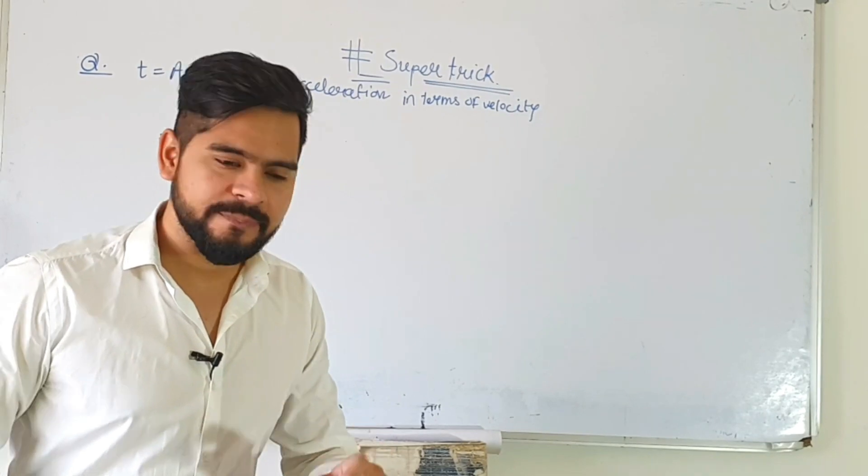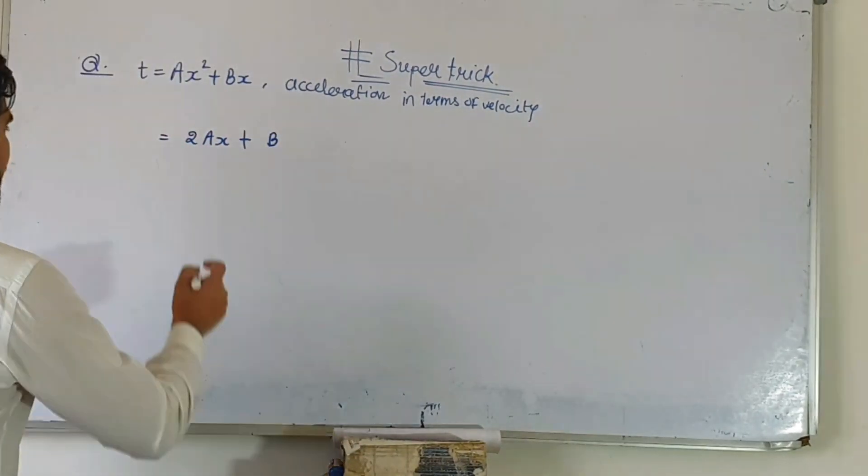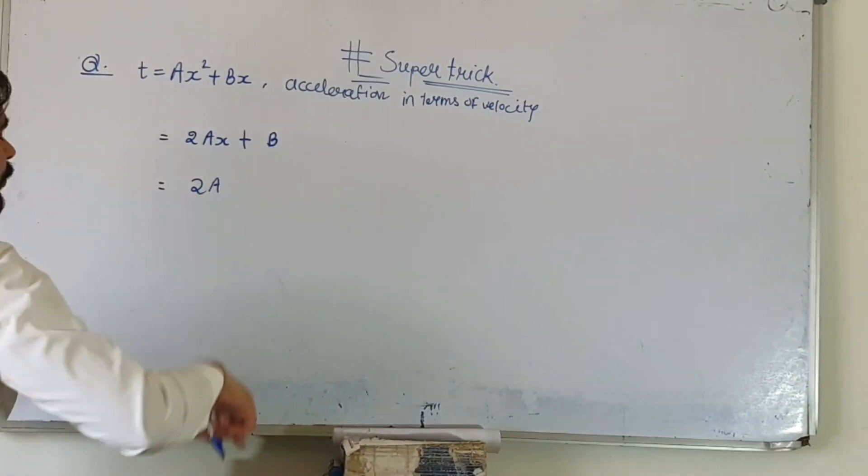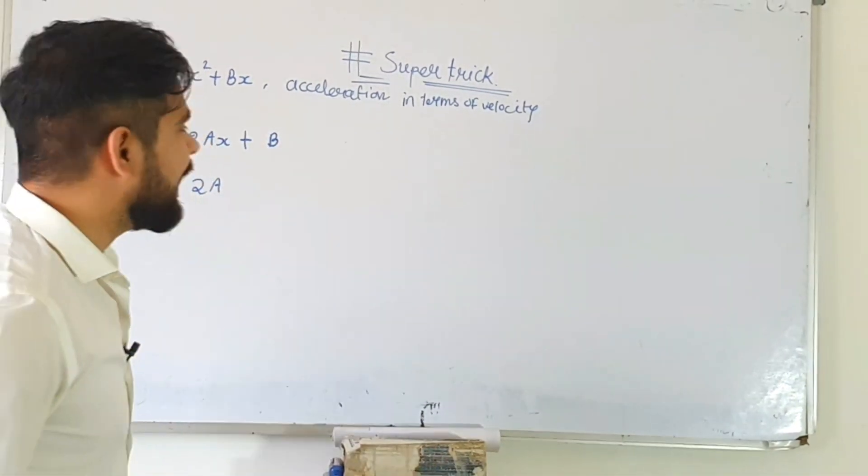Now one more time differentiate this equation. If I differentiate this equation again, it will become only 2a because b becomes 0, since b doesn't have x with it.